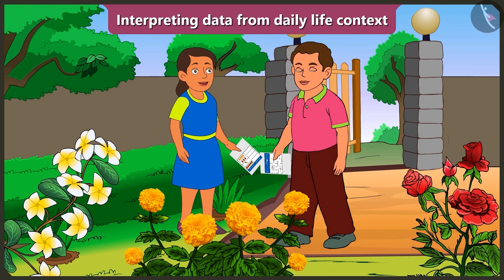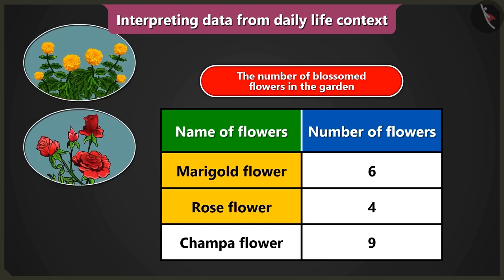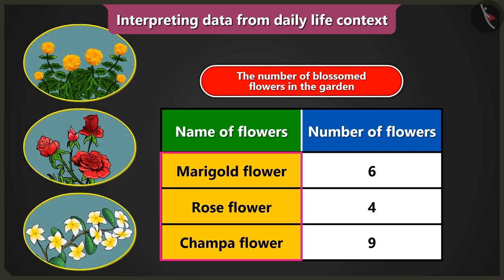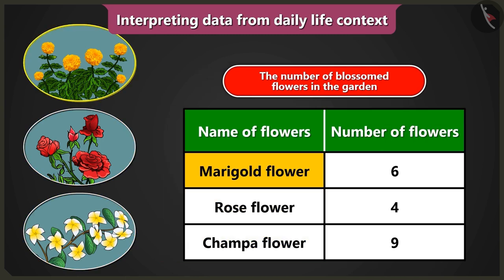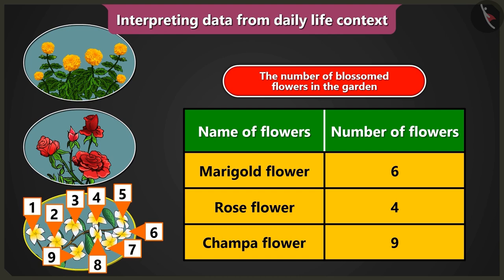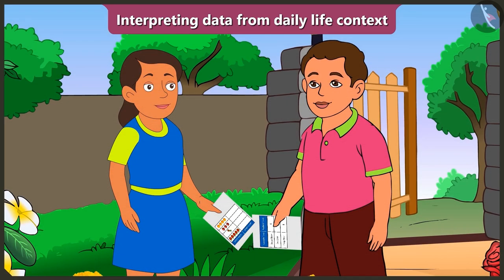Now I will not have to count the flowers one by one. After understanding the table, I have understood which and how many flowers have blossomed in the garden. I understood that there are three kinds of flowers — Merrickol, Rose, and Champa — that have blossomed in the garden. There are six Merrickol flowers, four Rose flowers, and nine Champa flowers that have blossomed. You have really explained the data in the table very well.